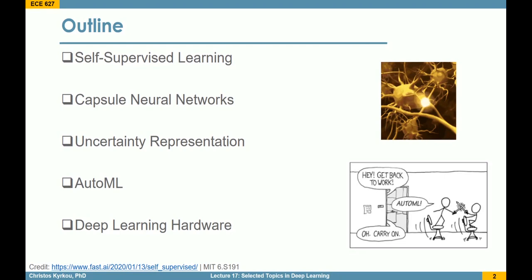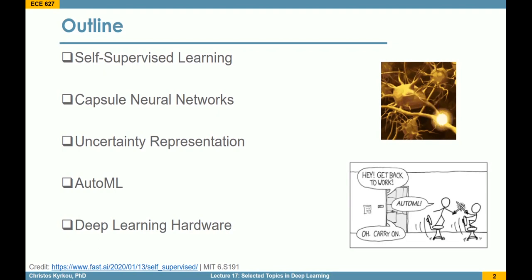We'll also touch on how we can model uncertainty in deep learning and machine learning in general, so that we can provide a model with the ability to figure out when a prediction is not confident, and to make the model understand what it knows and what it doesn't know. Finally, we'll talk about efforts to automate the process of building deep learning models, and the underlying hardware used to run these models.